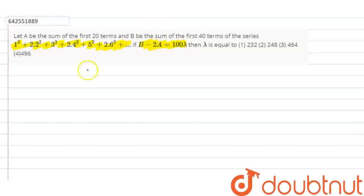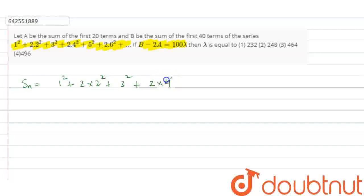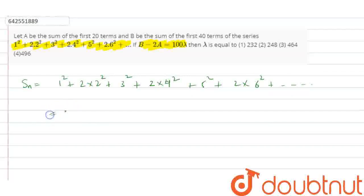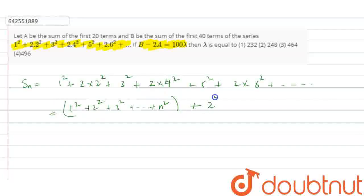Now we will solve the series. The sum of n terms is: 1 squared plus 2 times 2 squared plus 3 squared plus 2 times 4 squared plus 5 squared plus 2 times 6 squared, and so on till n terms. We can rewrite this as 1 squared plus 2 squared plus 3 squared plus n squared, plus 2 times (2 squared plus 4 squared plus 6 squared plus 8 squared) till n squared.